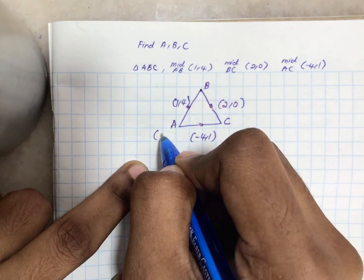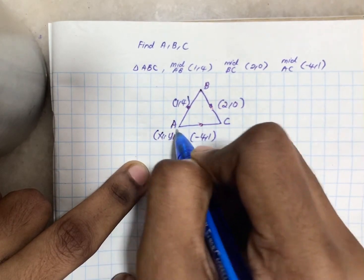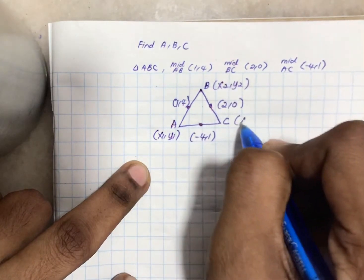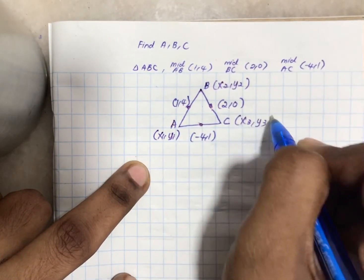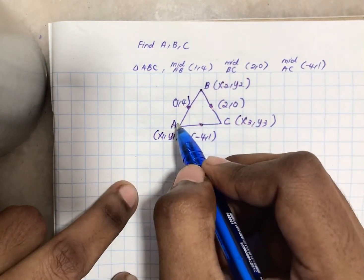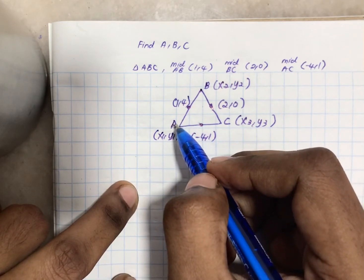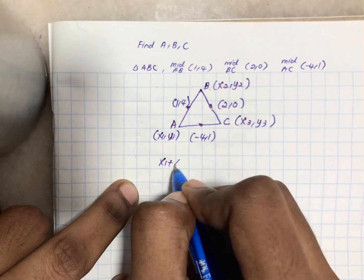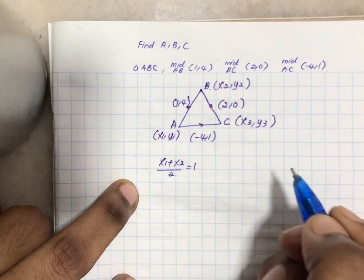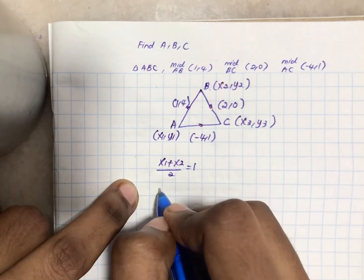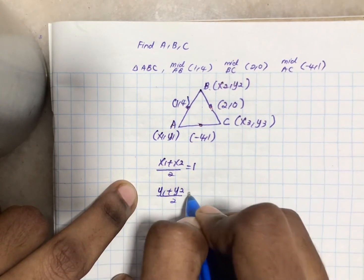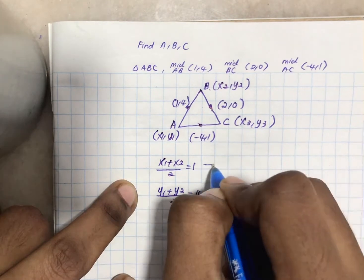I'm going to label my vertices as A(x1,y1), B(x2,y2), C(x3,y3). Let's write the expression for midpoint of AB. We do (x1+x2)/2 = 1 and (y1+y2)/2 = 4. That will lead to x1+x2 = 2 and y1+y2 = 8.